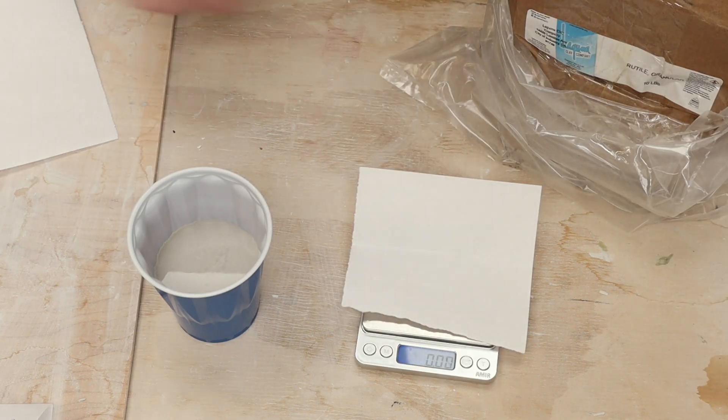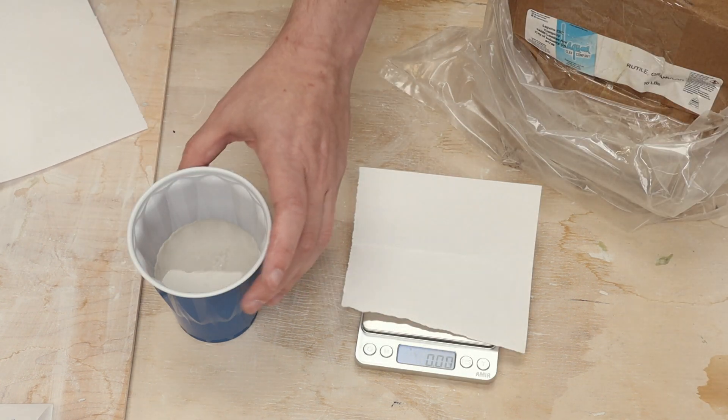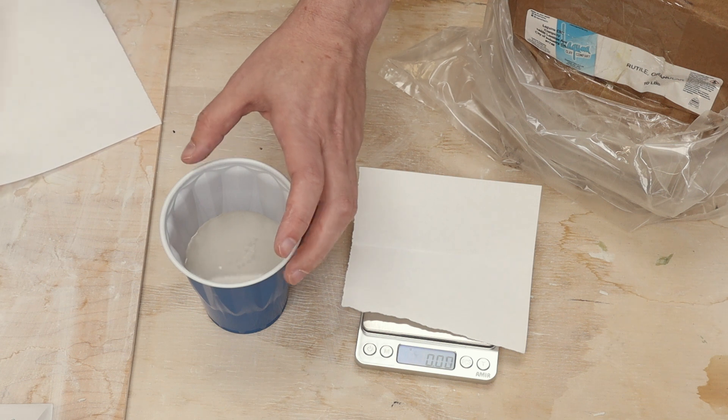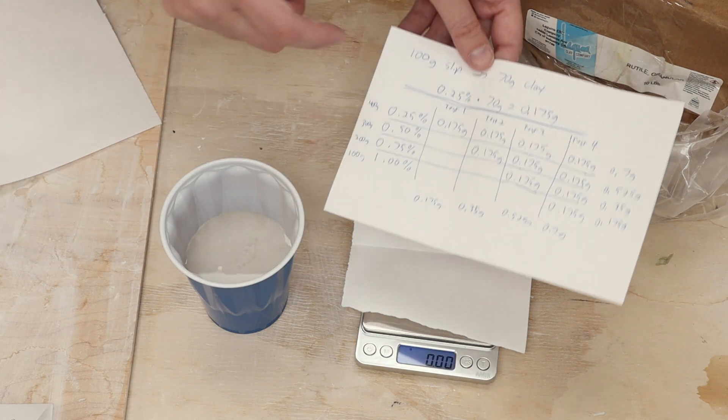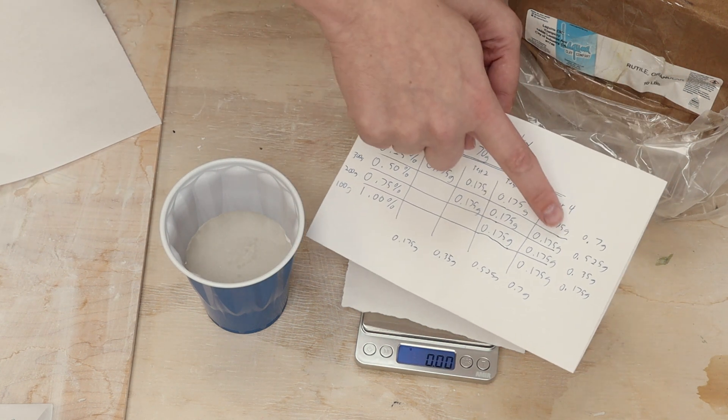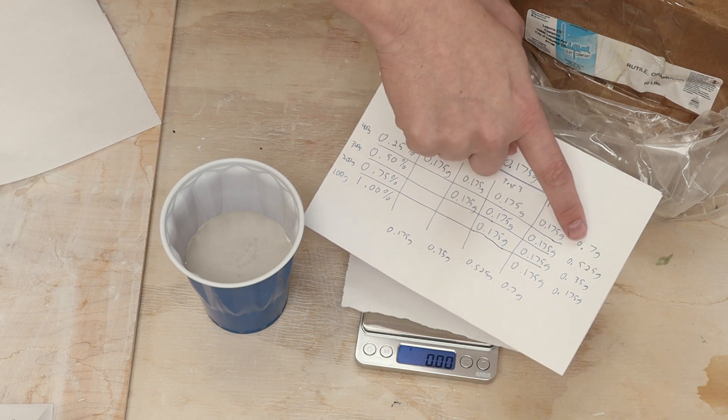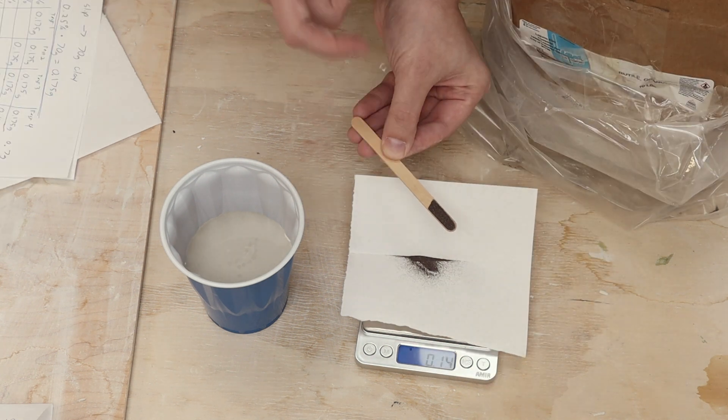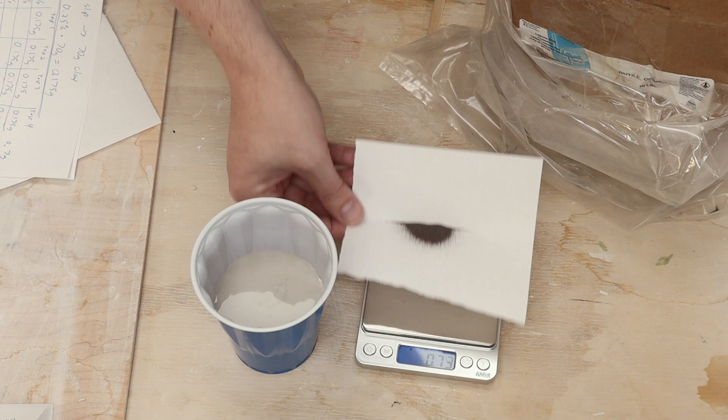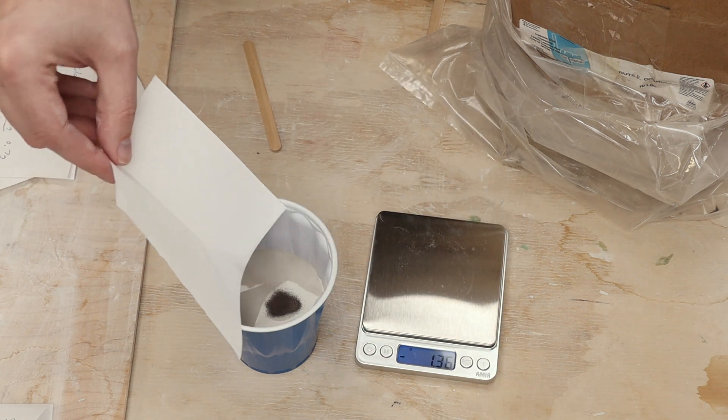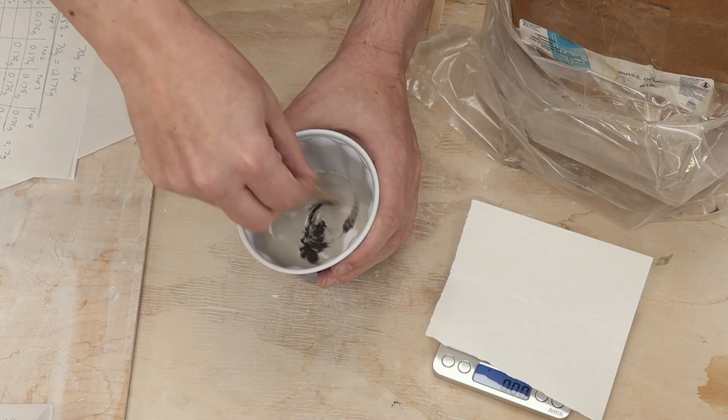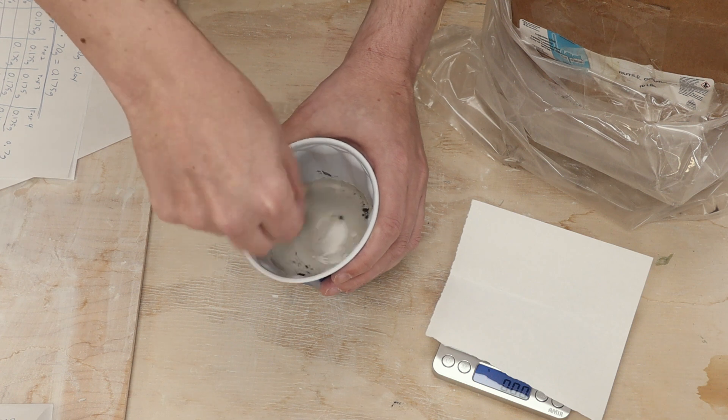All right, so now I pulled out my high precision scale. Now we bring this 400 grams of slip up to a quarter of a percent. So basically, I'll have a quarter percent per test tile to start with. That's 0.7 grams. All right, that was 0.73, but it should be good enough.